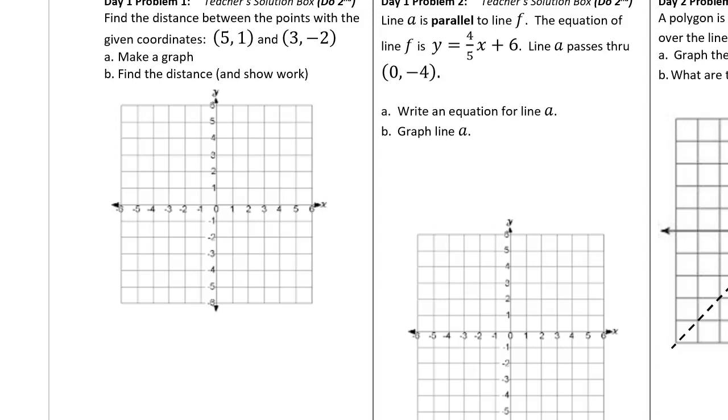Here's the answer for day one problem one. Find the distance between these points. 5 comma 1 is located here. 3 comma negative 2 is located here.